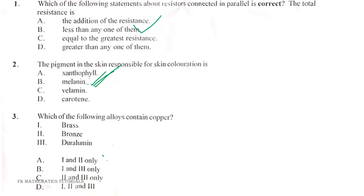Question 3. Which of the following alloys contains copper? Remember that brass is made up of copper and zinc, and bronze is made up of copper and tin. So it is only the two of them that contain copper. The correct answer is option A.